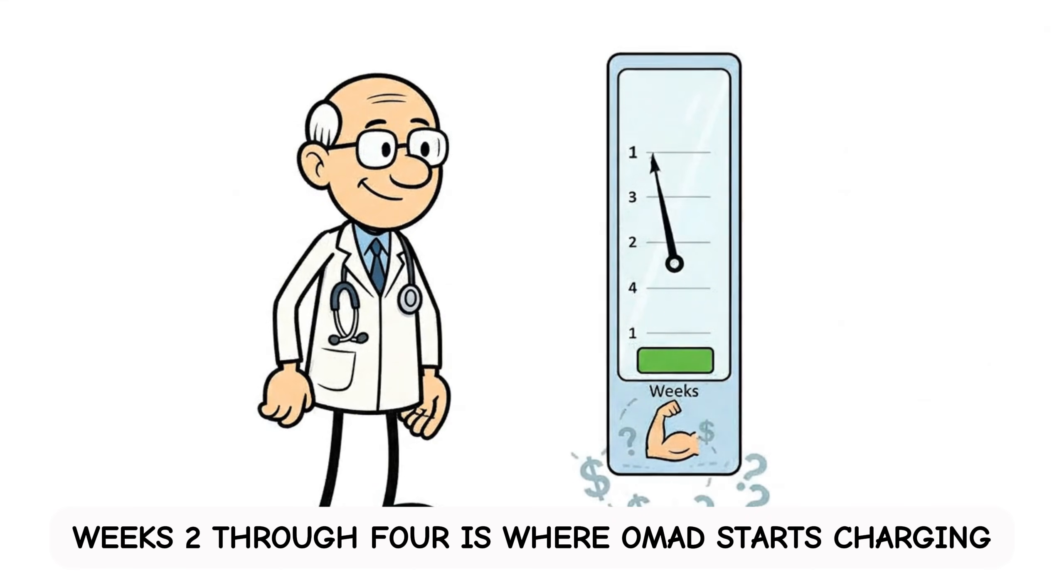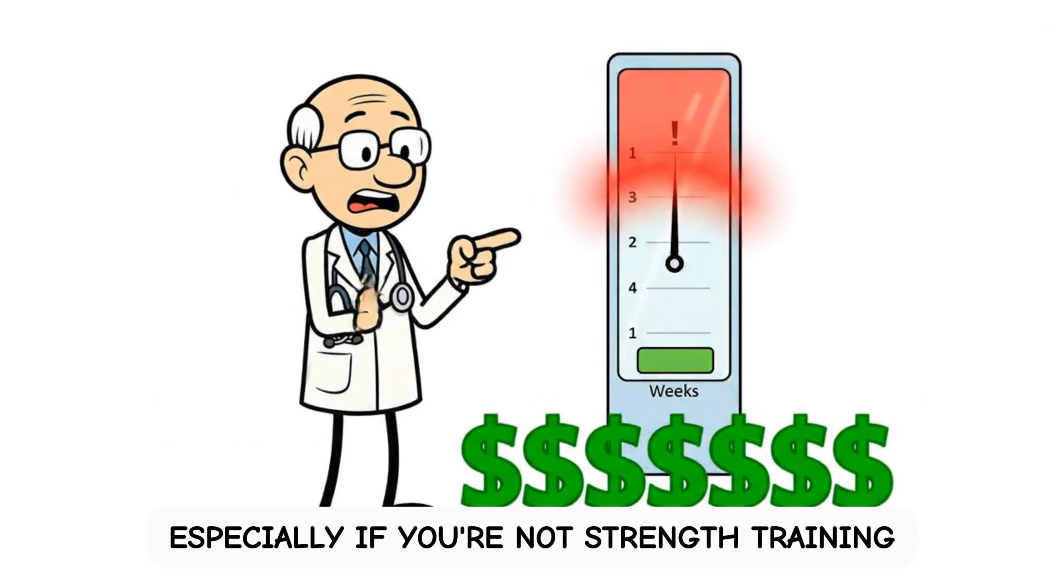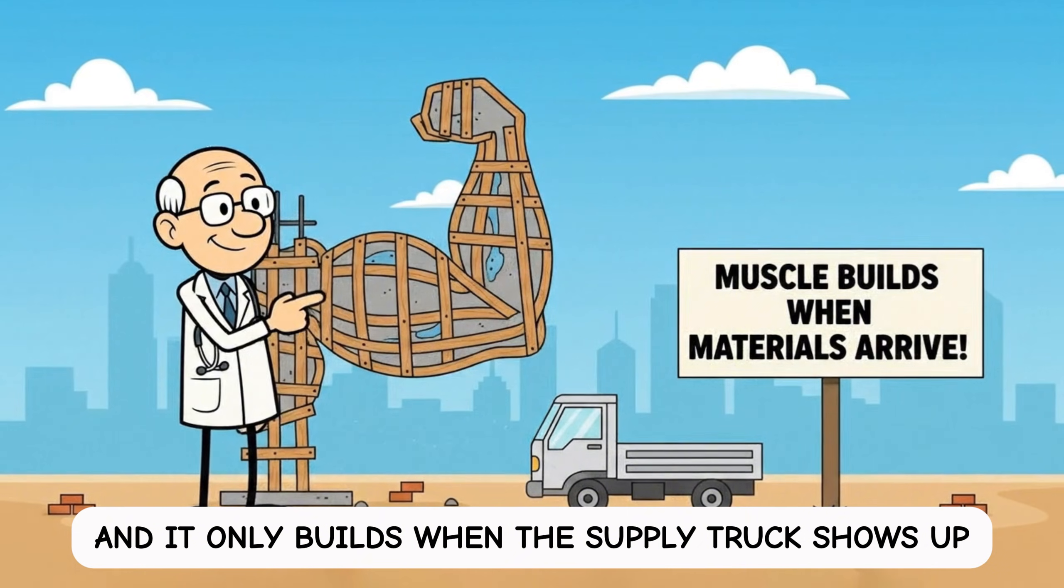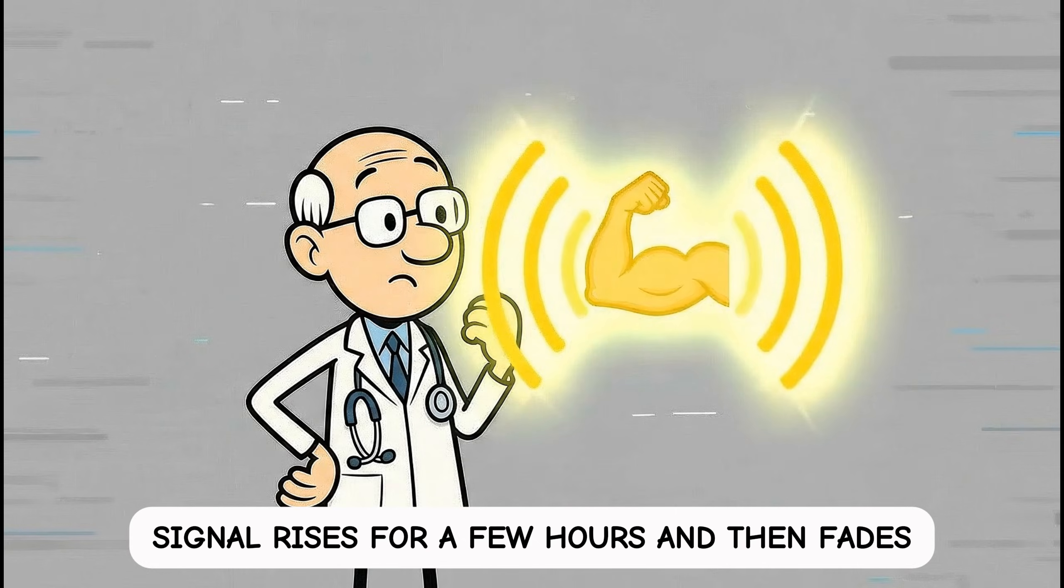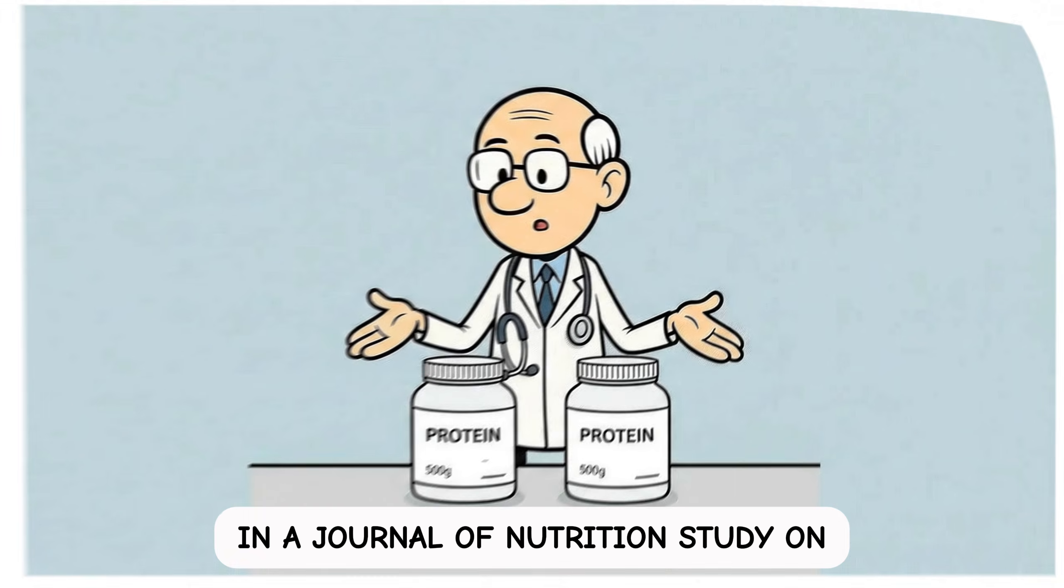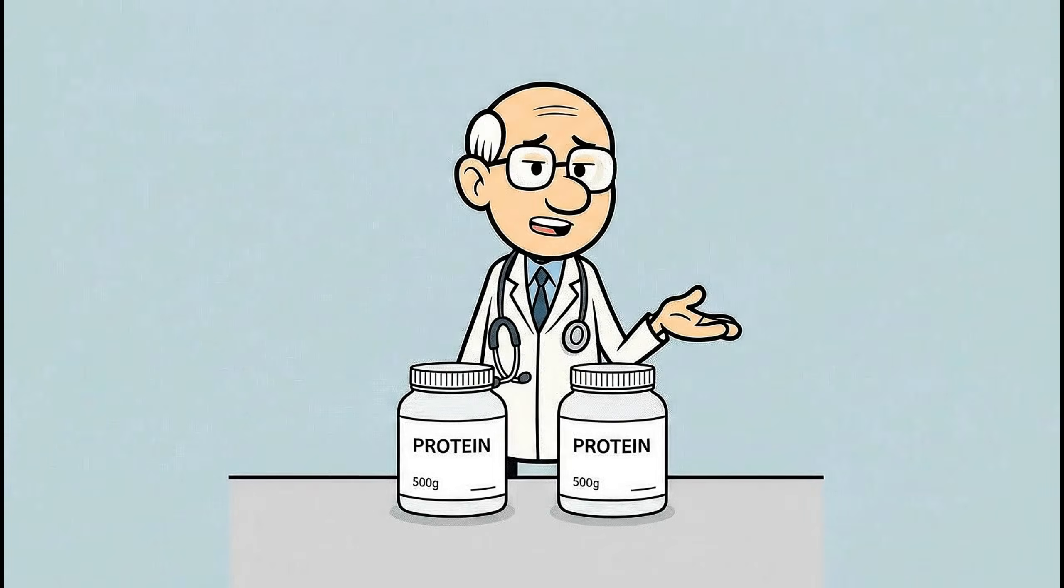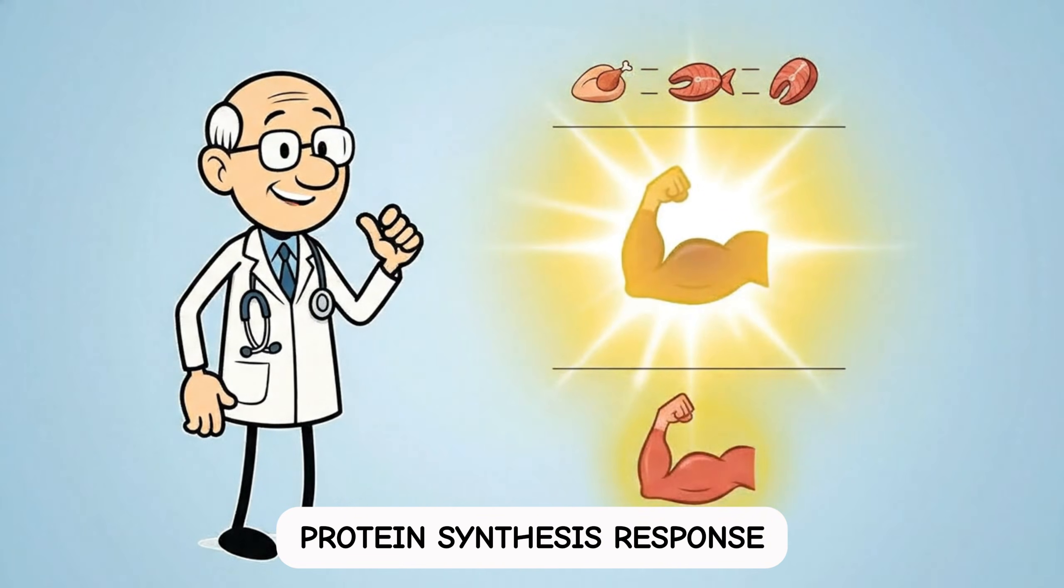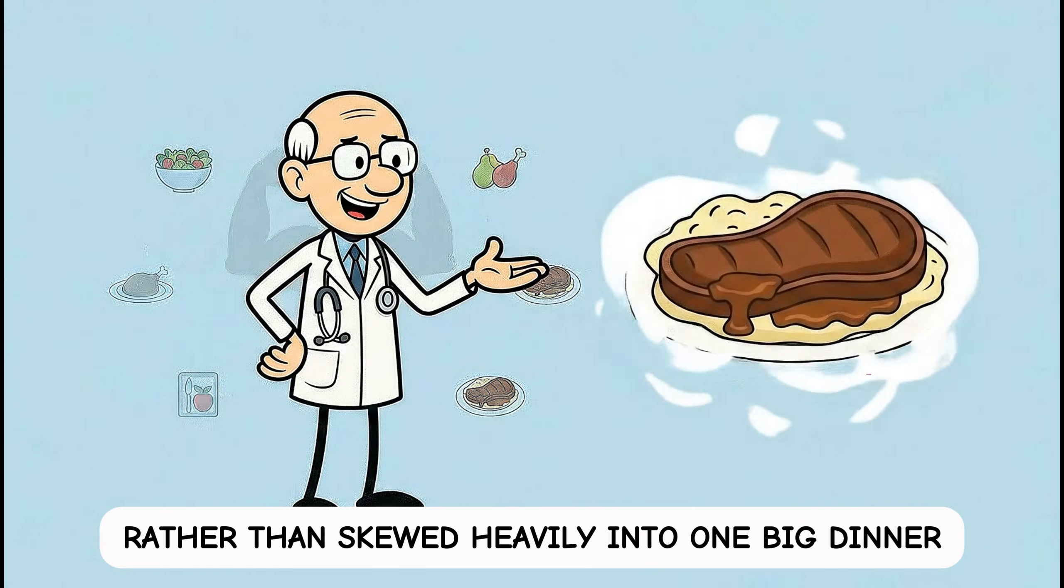Weeks 2 through 4 is where OMAD starts charging interest for most people, especially if you're not strength training. Muscle isn't a savings account, it's a construction site, and it only builds when the supply truck shows up. After a protein-rich meal, the muscle-building signal rises for a few hours and then fades, which is why repeated build signals across the day matter. In a Journal of Nutrition study on protein distribution, the same total daily protein produced about a 25% higher 24-hour muscle protein synthesis response when it was spread more evenly across meals, rather than skewed heavily into one big dinner.